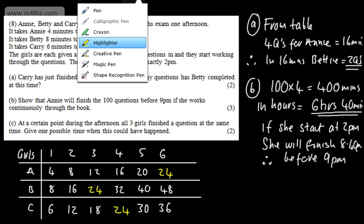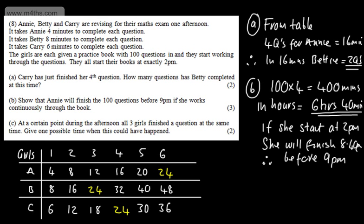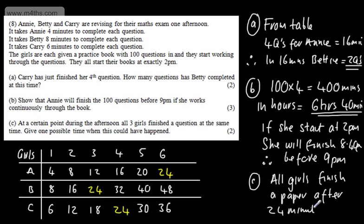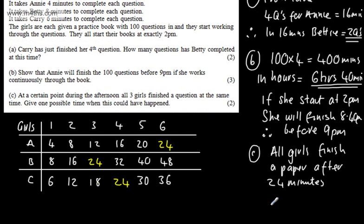So we can see now that on this period, they're going to have done that. From our table of workings, we can write in part C, all girls finish a paper after 24 minutes. Therefore, now one possible time it could happen was 2.24 PM. And that is my answer.